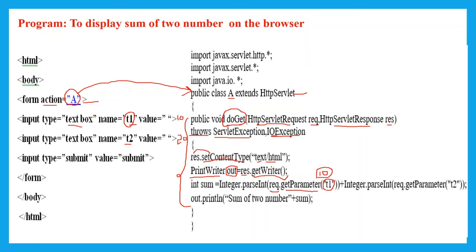We also call getParameter with the input type name T2 to retrieve the value 20, also in String form. To perform the sum, we need to convert the strings to integers. We use the Integer class with the parseInt method, which converts String to integer type. The value 10 is converted from String to integer, and similarly 20 is converted using parseInt.